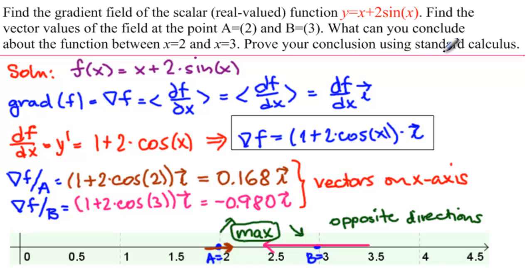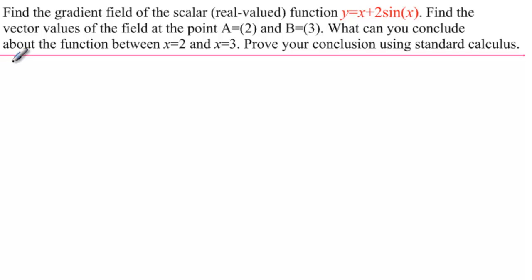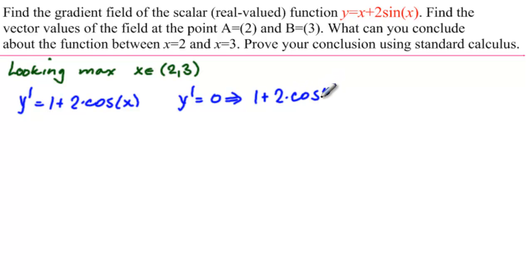So now we're going to prove that conclusion using standard calculus. So remember that we're looking for a max where x is between 2 and 3. So how would we find the max according to standard calculus? So y prime is 1 plus 2 times cosine of x. We're looking for extreme values. We set it equal to 0. So we would say y prime equals 0 implies that 1 plus 2 times cosine of x equals 0. And from here we can see that that means that cosine of x must be minus 1 over 2.